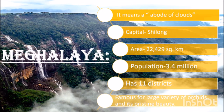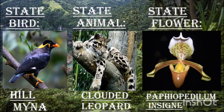Meghalaya is nestled in the remotest regions of Northeast India. It literally means 'abode of clouds.' Its capital is Shillong and it has an area of 22,429 square kilometres and a population of 3.4 million. It can feel like travelling in a foreign land even for an Indian traveller. Some villages in Meghalaya boast forests as old as 800 years, helping maintain the ecological equilibrium of the state. It receives ample rainfall and is the wettest region of India, bordered by Assam in the north and Bangladesh in the south. The state bird is the Hill Myna, state animal is the clouded leopard and the state flower is Paphiopedilum insignia.